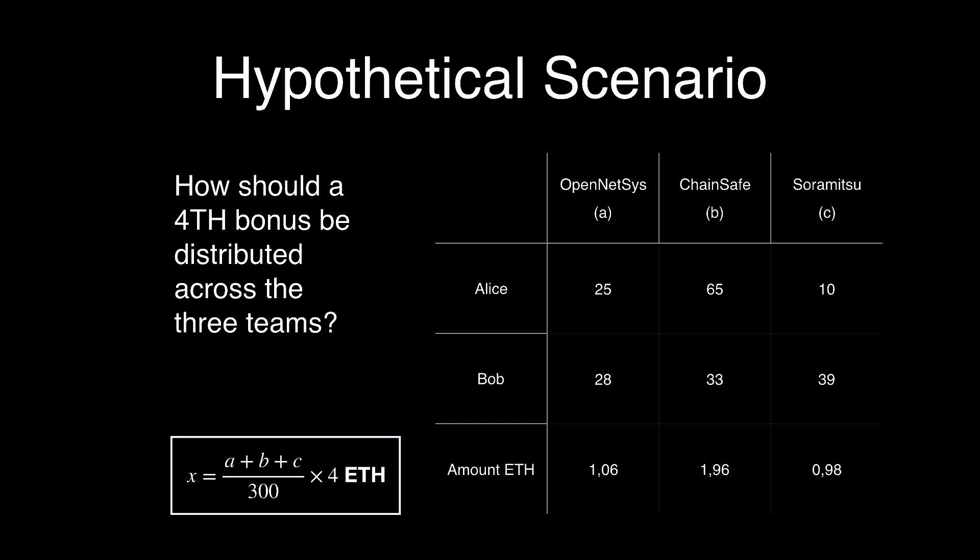In this hypothetical scenario, there's a four ETH bonus and the two people on the committee are Alice and Bob. They each have 100 dots. Alice distributes 25 to OpenNetSys, 65 to ChainSafe, and 10 to Suramitsu. Bob distributes 28 to OpenNetSys, 33 to ChainSafe, and 39 to Suramitsu. The formula is A plus B plus C divided by 200, multiplied by four ETH because 200 dots participated — that's a little typo there. At the bottom you see how much each team receives as their bonus.